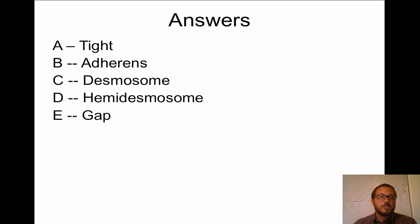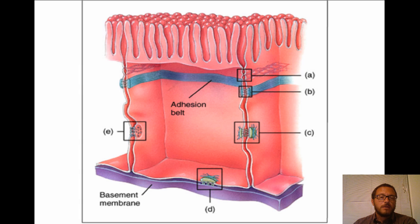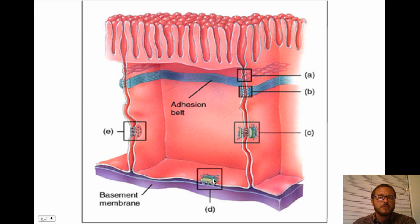That pretty much sums it up — really straightforward stuff. You should be able to tell where each junction is found: the hemidesmosome is only on the basal surface, desmosomes are on lateral surfaces between adjacent cells, and microvilli at the top increase the surface area of the apical surface. Good luck on the quiz.